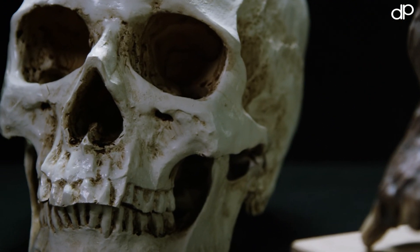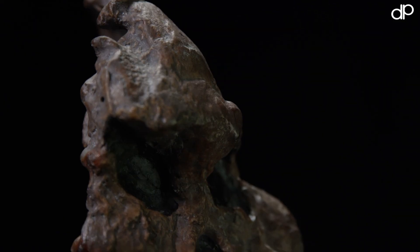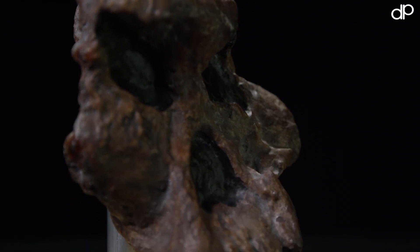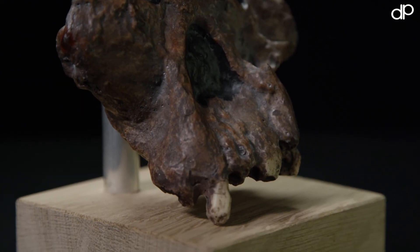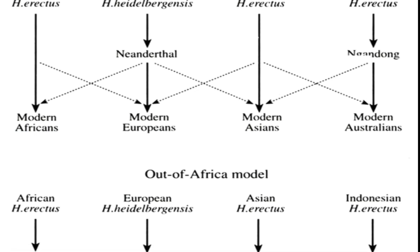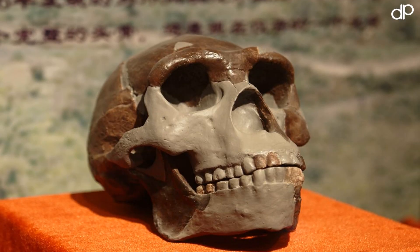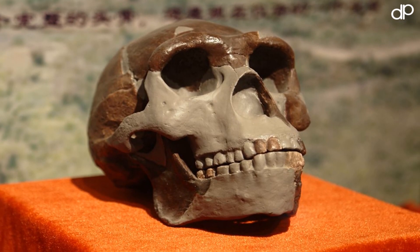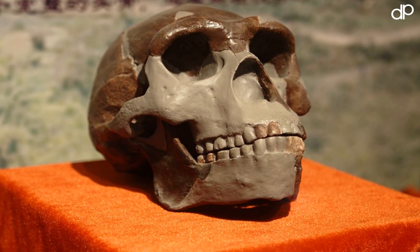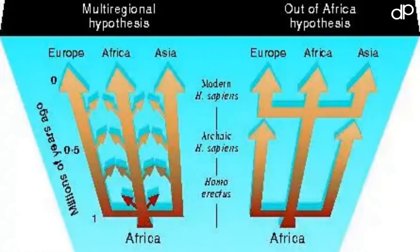Despite its widespread acceptance, the theory has faced challenges from some researchers who question certain aspects of the theory or propose alternative explanations. Some of the key challenges include the multi-regional hypothesis, which proposes that modern humans evolved from multiple ancestral populations in different parts of the world rather than a single ancestral population in Africa. This alternative explanation is based on the idea that early human populations in different parts of the world interbred and exchanged genetic material, leading to the evolution of modern humans.